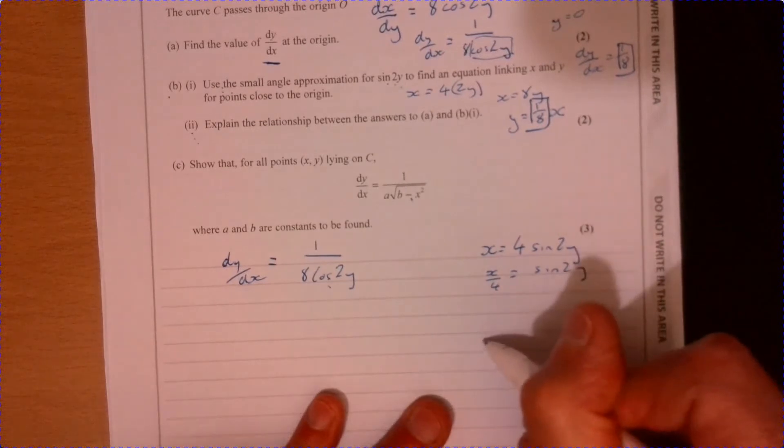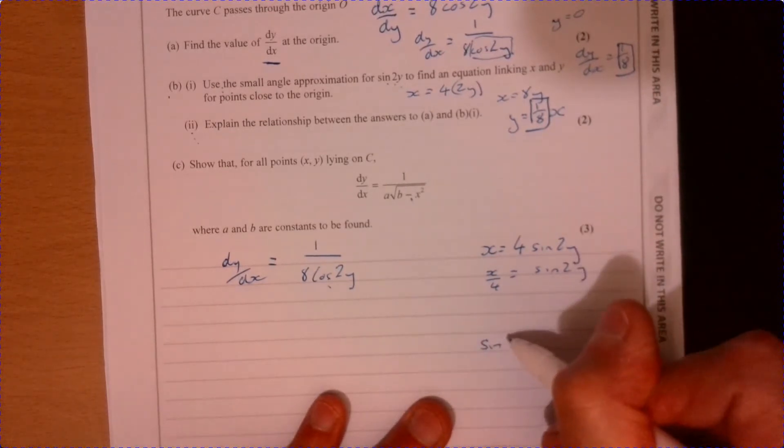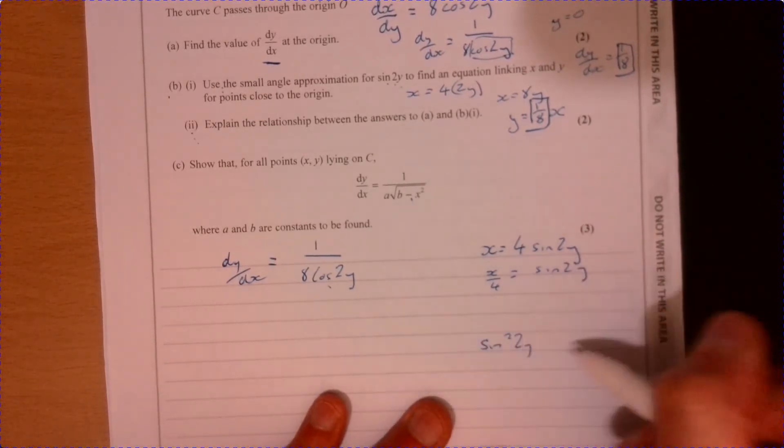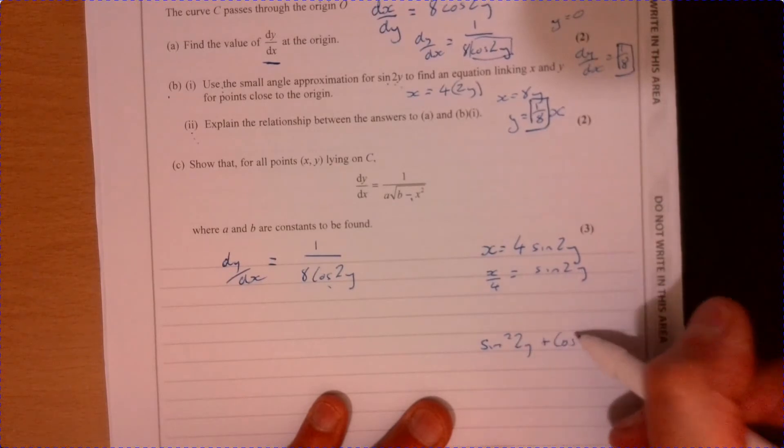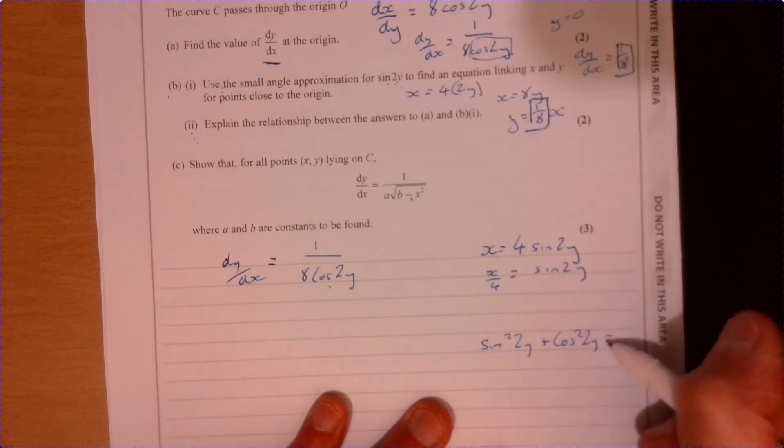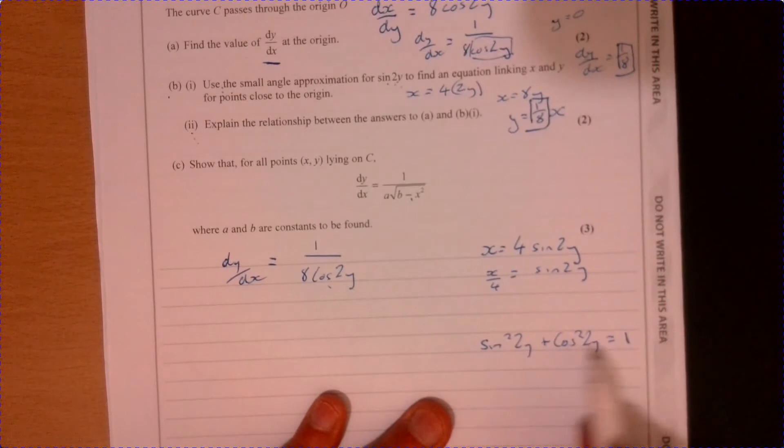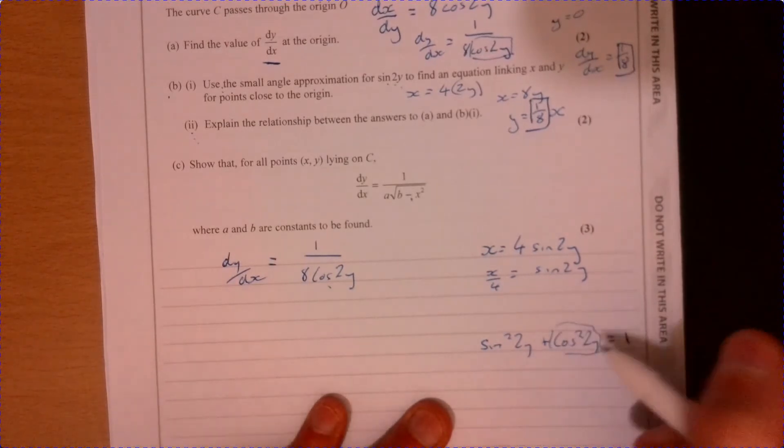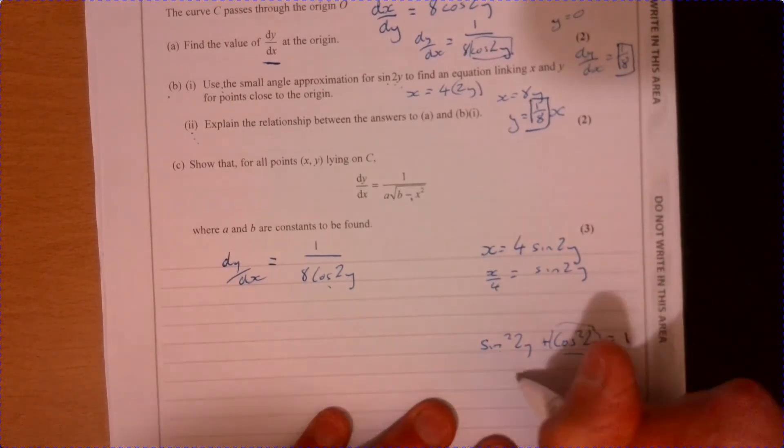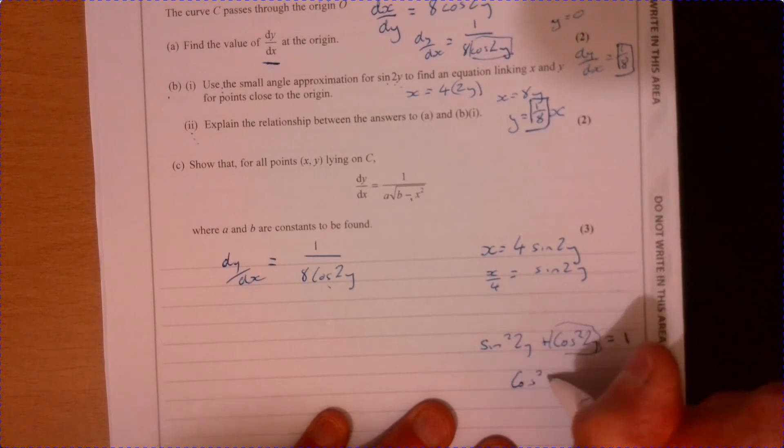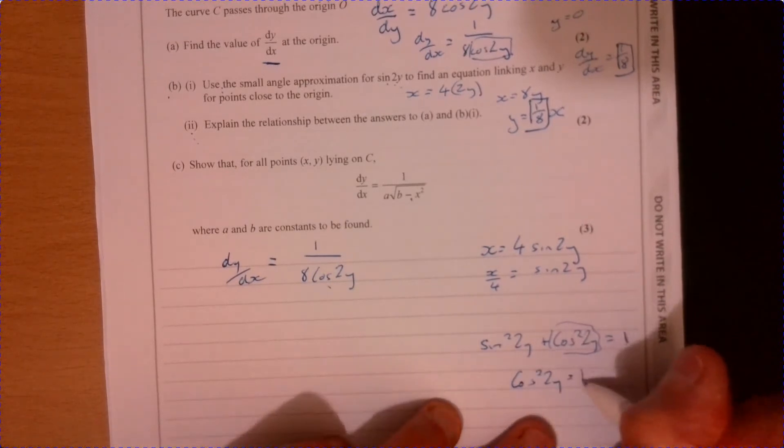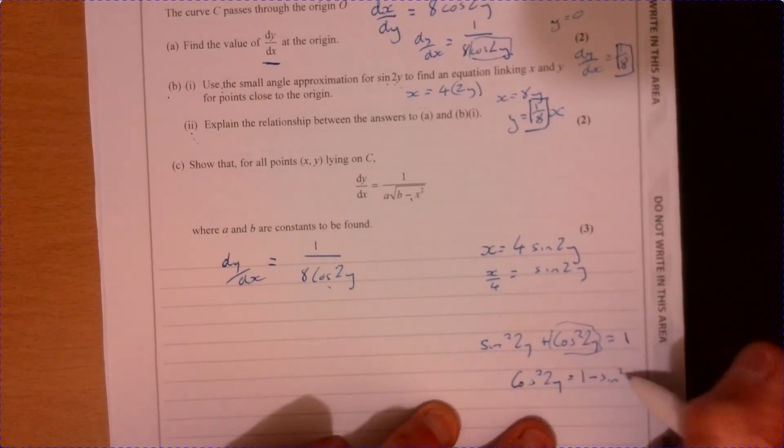Now I'm looking at this cos 2y. Oh, I know. If I were to write sine squared 2y plus cos, this is probably the crunch of this question, knowing to write this down, thinking about this. So cos 2y is 1 minus this one.